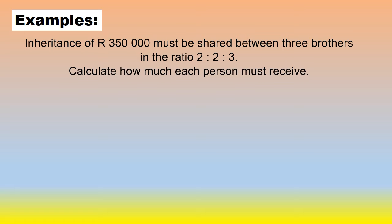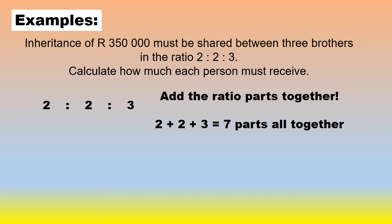Another example. Inheritance of 350,000 must be shared between three brothers in the ratio 2 to 2 to 3. Calculate how much each person must receive. They say to you divide 350,000 into the ratio 2 to 2 to 3. The first thing we do is add up all the ratio parts together. 2 plus 2 is 4 plus another 3 gives you 7 parts all together. Person number 1, he got 2 parts. 2 out of the 7 parts of the 350,000. So 2 divided by 7 times 350,000 gives you 100,000.